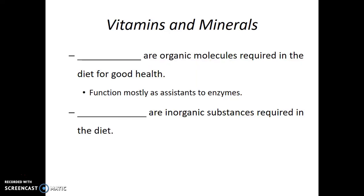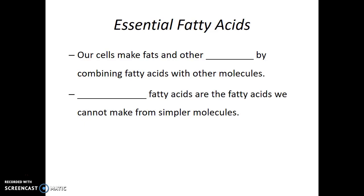The next essential nutrients are vitamins and minerals. Even though these two substances are often listed together, they are technically different. Vitamins are organic molecules that are essential in the diet for good health — many function as assistants to enzymes. Minerals are inorganic substances required in the diet, often elemental nutrients such as calcium or iron. There are also essential fatty acids — our cells make fats and other lipids by combining fatty acids with other molecules. Essential fatty acids are those we cannot make from simpler molecules, such as omega-3 fatty acids.